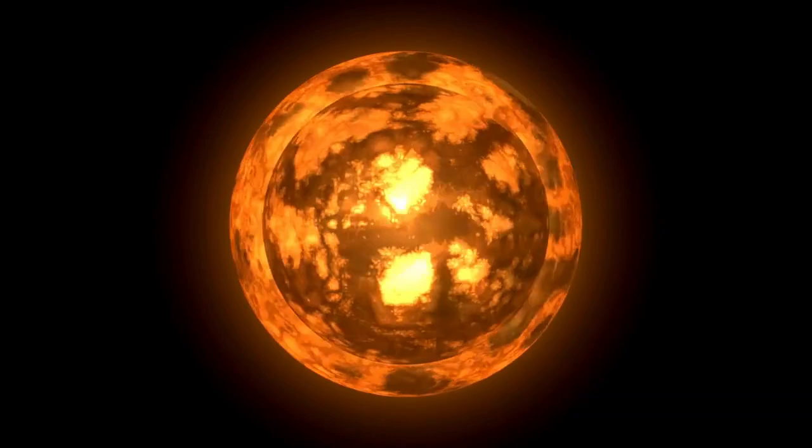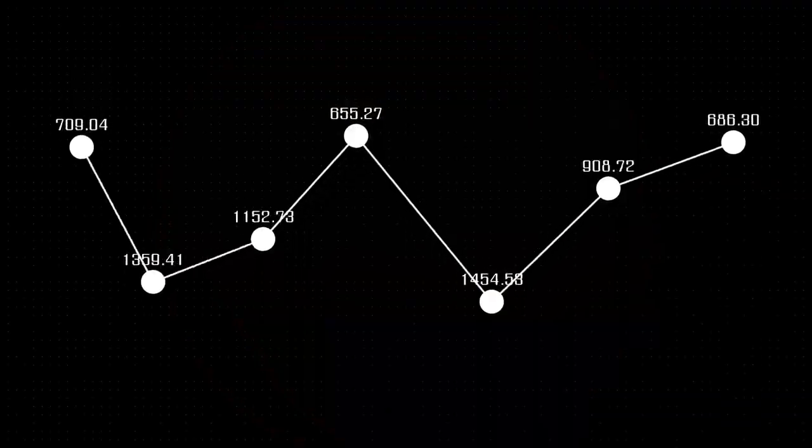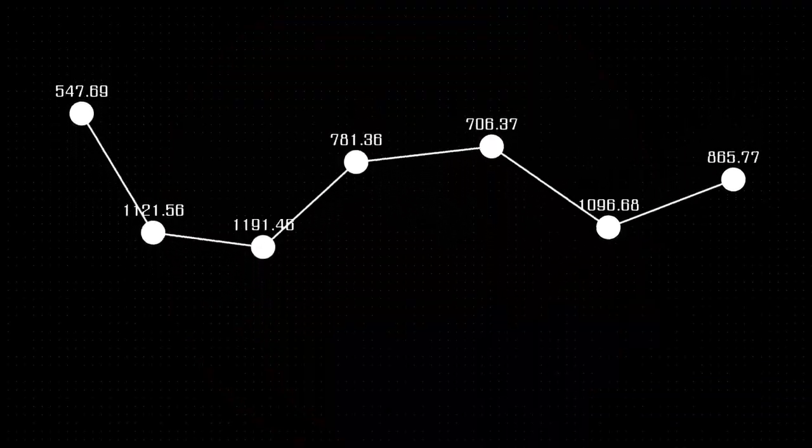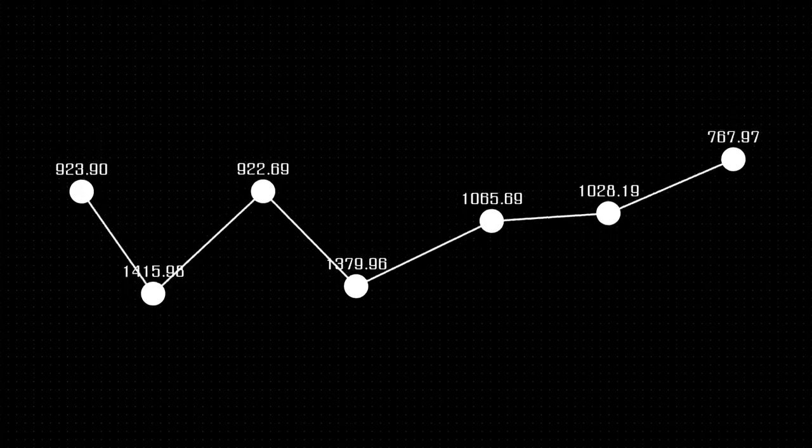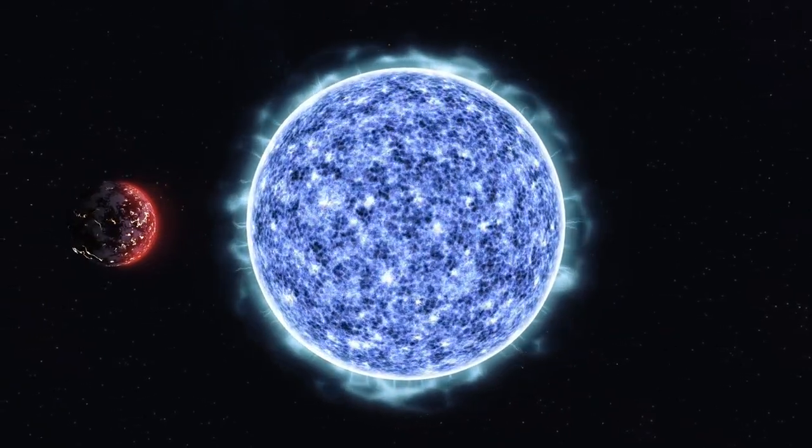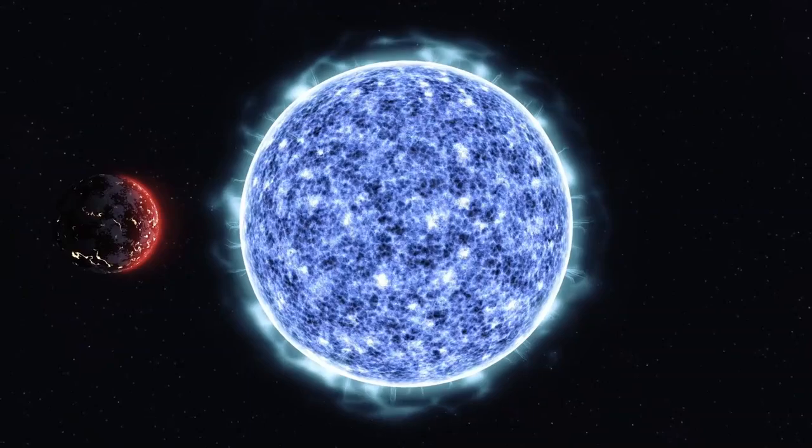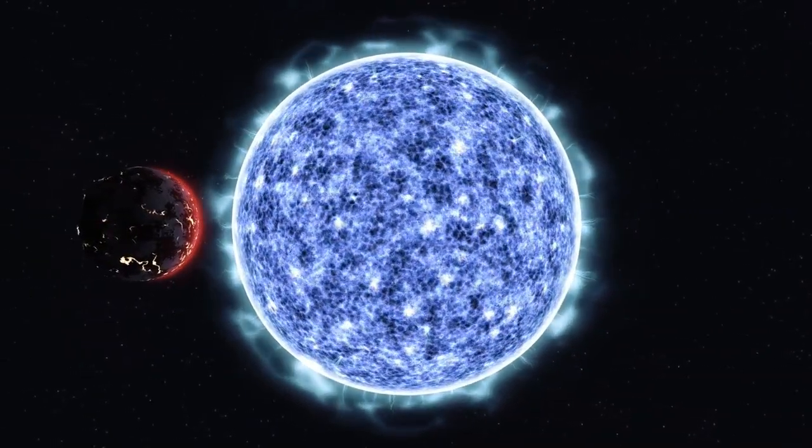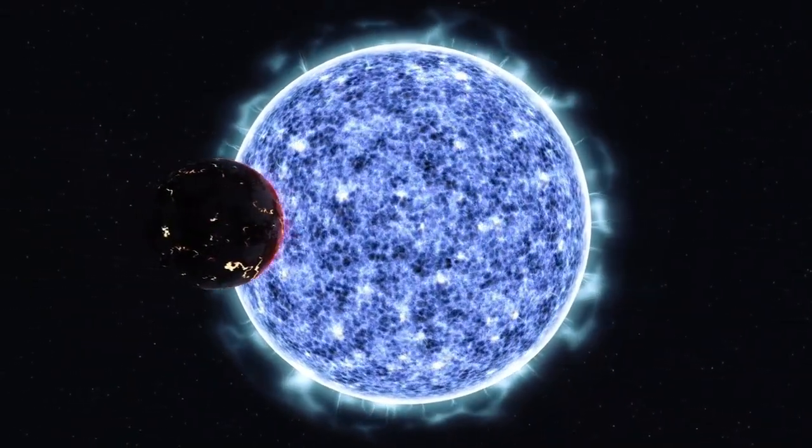However, brightness is not the only outstanding feature of the star. Betelgeuse is known for its distinctive reddish color, which is due to its cool surface, which has a temperature of about 3,500 Kelvin.